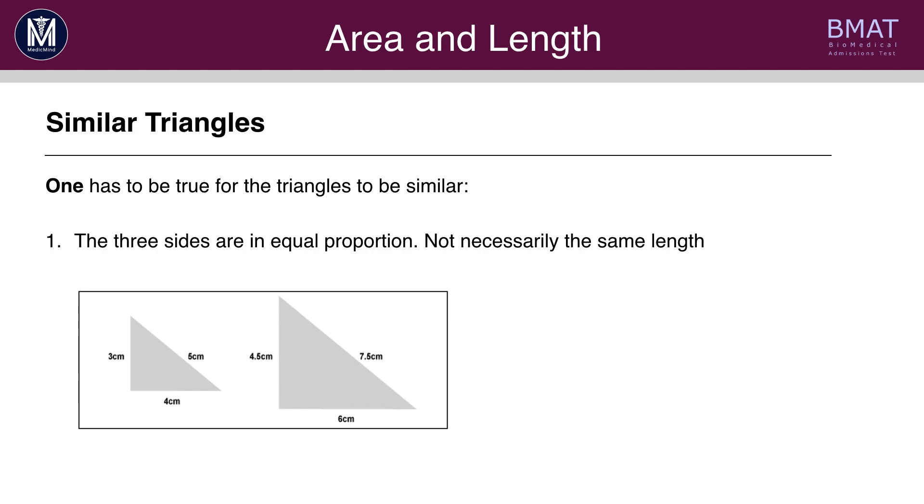First rule, the three sides are in equal proportion. They don't necessarily have to be the same length, but they have to be in equal proportion. So have a look at these two triangles. The triangle on the left has a ratio of 3 to 4 to 5. The triangle on the right has a ratio of 4.5 to 6 to 7.5. And when you simplify the ratio on the right, it turns out to also be 3 to 4 to 5.